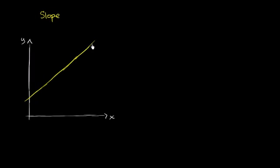So this right over here is some line. And just as a reminder, we can figure out the slope between two points. Two points define a line, and between those two points we can find the rate of change of y with respect to x.